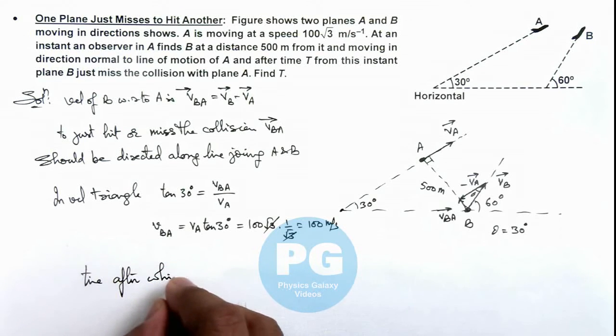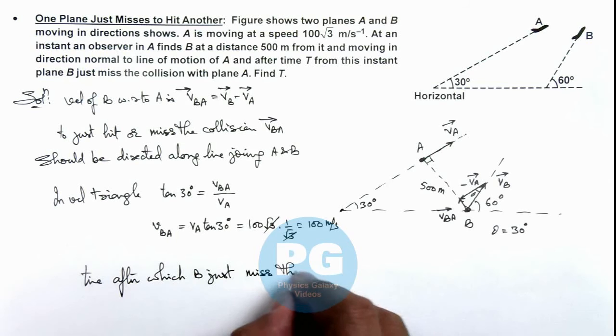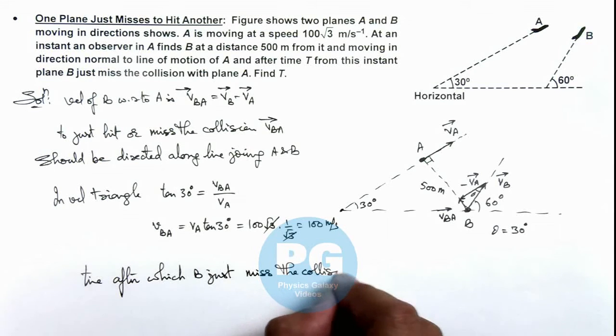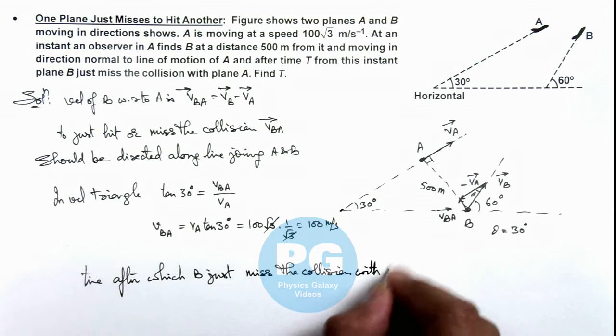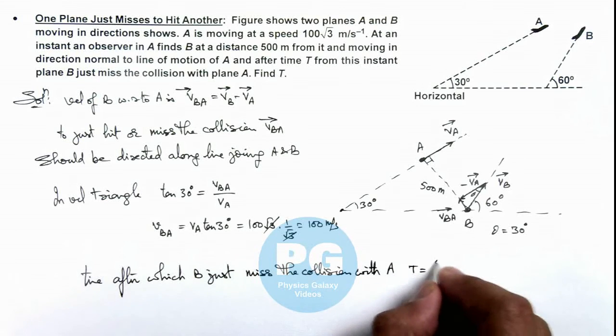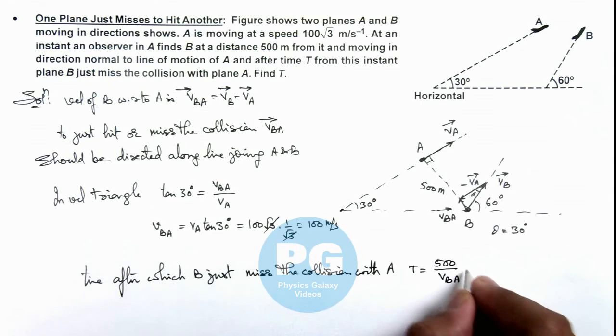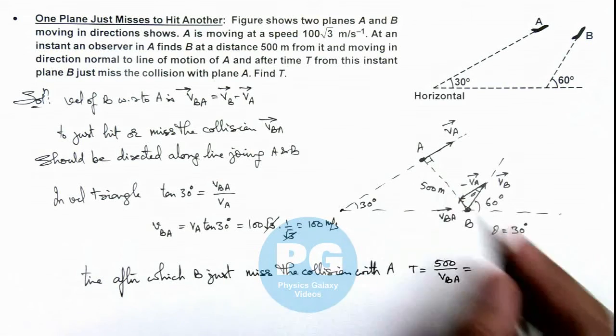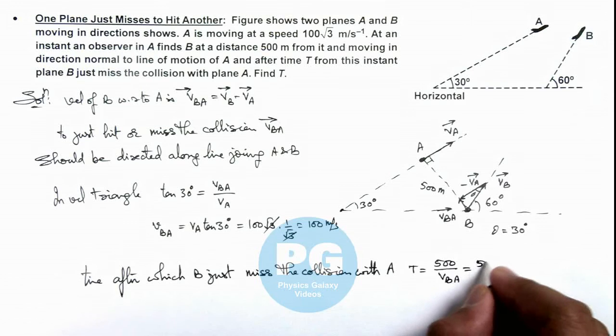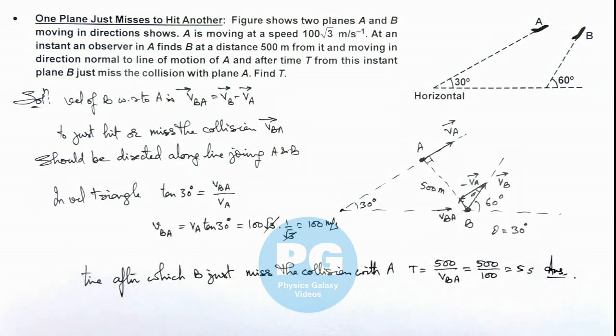After which B just misses, it just misses the collision with A. This can be directly given as the distance traveled is 500 divided by this velocity of B with respect to A, as we are taking A to be at rest. So this is 500/100, that is equal to 5 seconds. That is the final result of this problem.